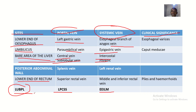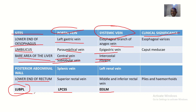The mnemonic for portal vein contributions is LPCSS — L is left gastric vein, P is para-umbilical vein, C is central vein, the first S is sublobular vein, the second S is splenic vein, and the last S is superior rectal vein.